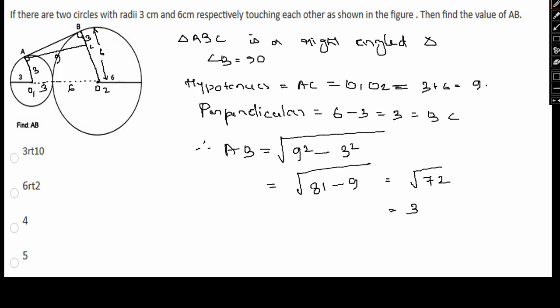72 is 36 times 2, square root of 36 times square root of 2. That is 6 root 2 centimeters. 6 root 2 will be our answer.